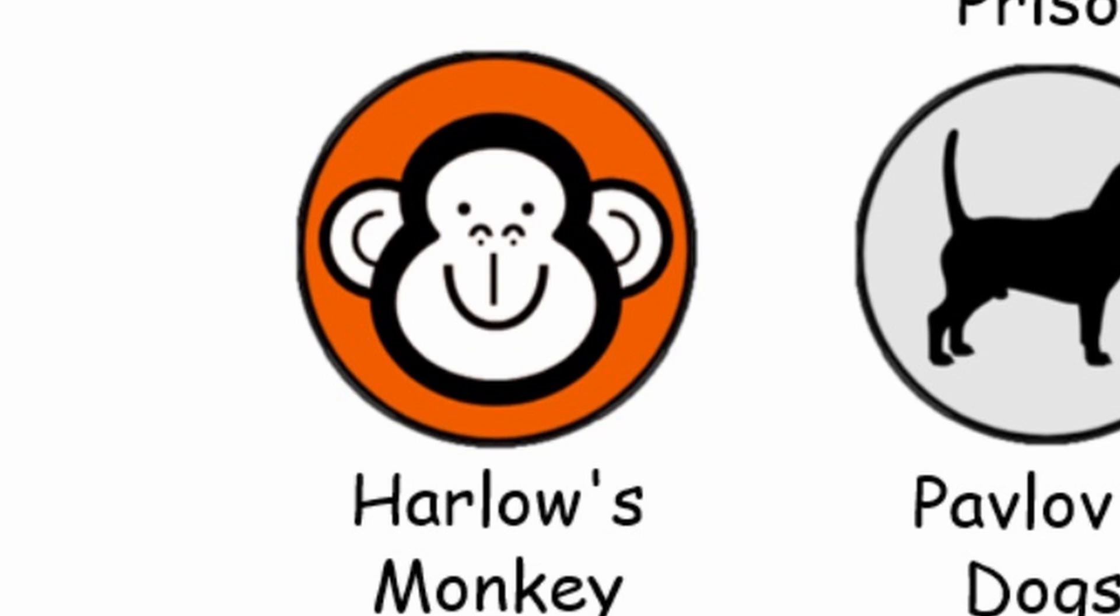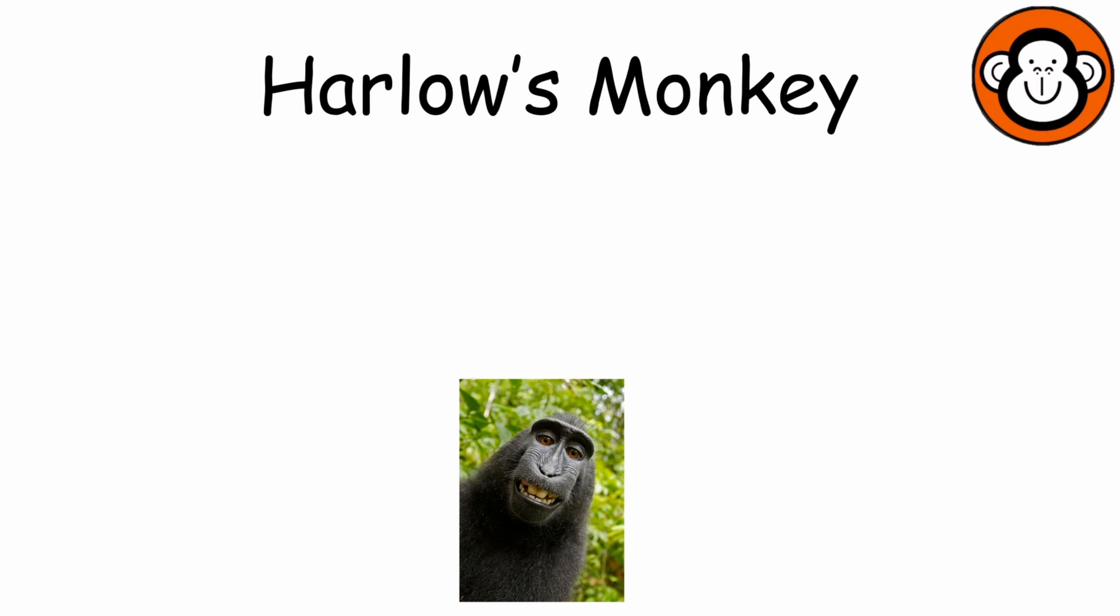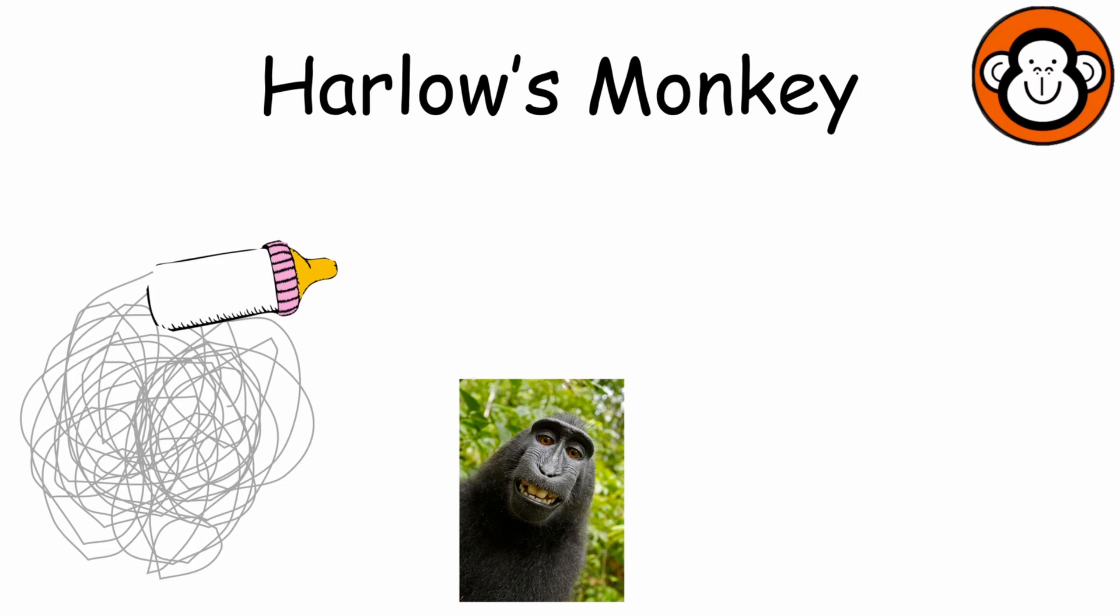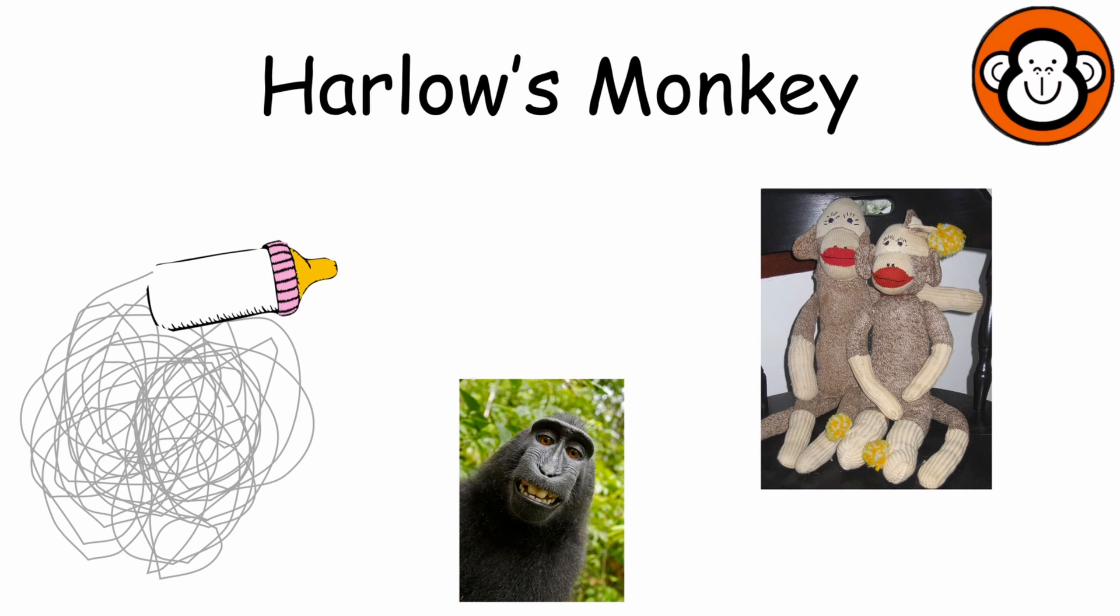Harlow's Monkeys. In Harlow's Monkey Experiment, infant Rhesus Monkeys were separated from their mothers and given two surrogate mothers. One made of wire with a feeding bottle and one made of soft terry cloth. Despite the wire mother providing nourishment, the monkeys spent significantly more time clinging to the comforting soft mother, highlighting the importance of emotional comfort in attachment and challenging the notion that attachment was solely based on nourishment.